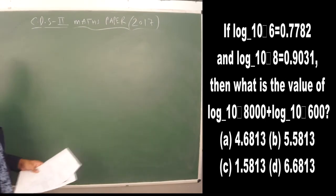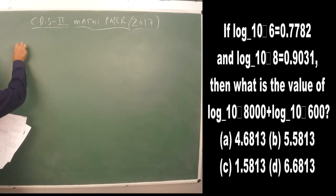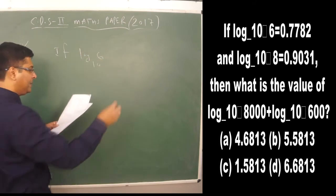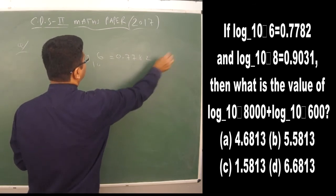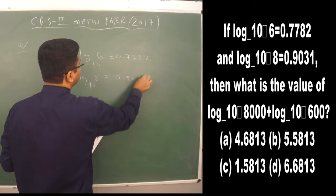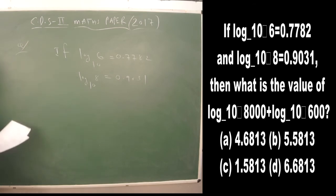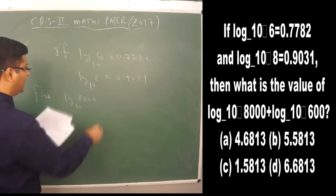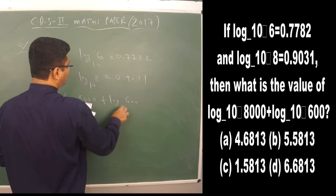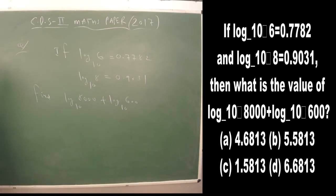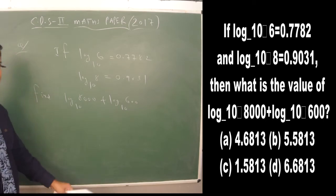The next question is from logarithm. Given log 6 (base 10) = 0.7782 and log 8 (base 10) = 0.9031, calculate log 8000 (base 10) + log 600 (base 10). We apply logarithm properties step by step.